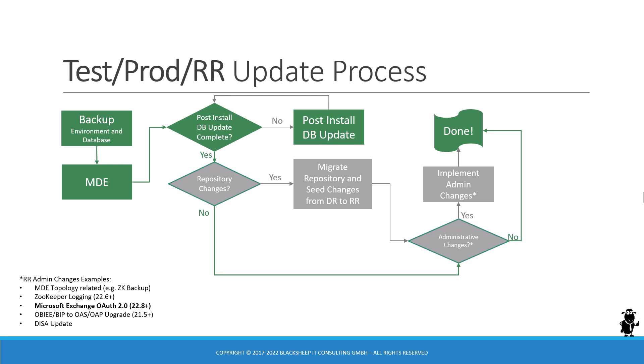You have to bring the environment down, run the MDE, run the post-install database update. And if you have repository changes — very likely so, especially if you are interested in the OCI AI integration — you have to make sure that the repository changes and any Siebel data changes are successfully migrated using the migration application. Then you might or might not have administrative changes to implement, and once they are implemented, you are done with the test or production update.